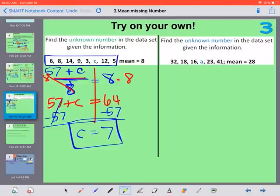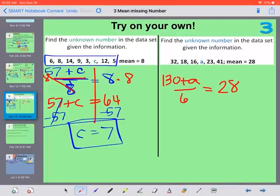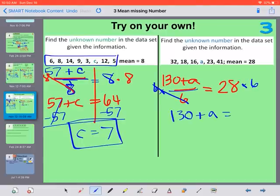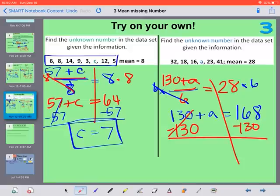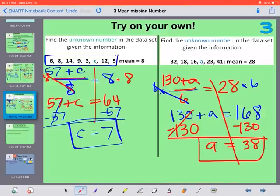Hopefully you tried this one as well before you started playing this. We have 1, 2, 3, 4, 5, 6 numbers. And our mean should give us 28. So we're going to add them all up and add A. So 32 plus 18 plus 16 plus 23 plus 41 gives us 130. So the opposite of dividing by 6 is multiplying by 6. So 130 plus A. 28 times 6 gives me 168. And then get rid of adding and subtracting. Subtract 130. Should have given us 38. So our unknown number was 38.